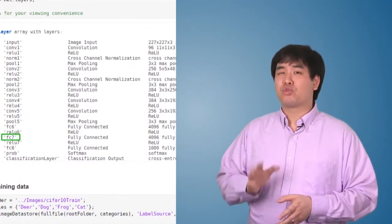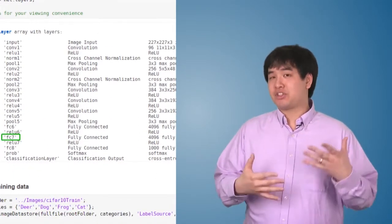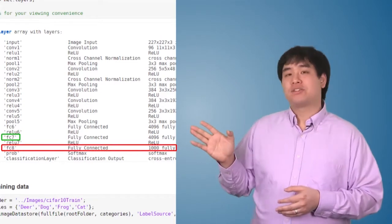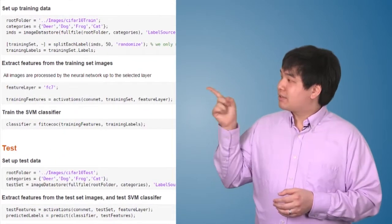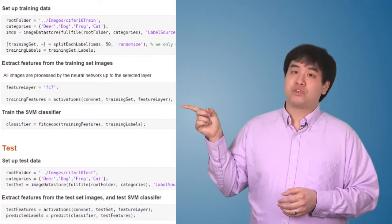Generally, the deepest layer of the network, right before the layer that actually starts classifying things, is a good place to start for feature extraction. So this single line of code extracts the features from that layer, and now we can give it to our machine learning classifier as a starting point.